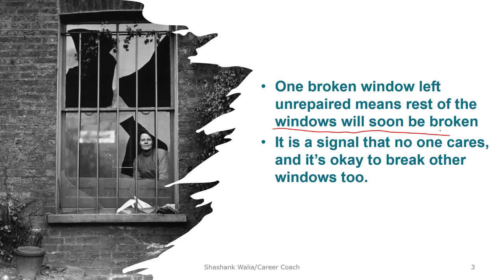For example, if someone abuses another person and that person doesn't respond aggressively, it means that person doesn't care and it's okay to abuse them more. Similarly, if your bike is damaged and you don't file any report, it signals that it's okay to damage it more — meaning the owner does not care and it's okay to create more damage, which results in crime.